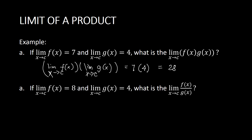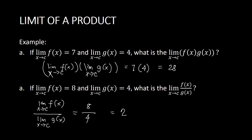For the quotient: if the limit of f(x) as x approaches c is 8, and the limit of g(x) as x approaches c is 4, what is the limit of f(x) over g(x) as x approaches c? We break it into limits: the limit of f(x) as x approaches c over the limit of g(x) as x approaches c. Take note of the positions. The limit of f(x) is 8 and the limit of g(x) is 4, so 8 over 4 simplifies to 2. Those are the different limit laws: constant multiples, sum, difference, product, and quotient. Be familiar with them to guide you in evaluating limit problems.